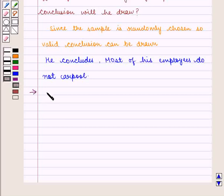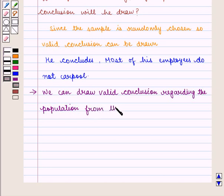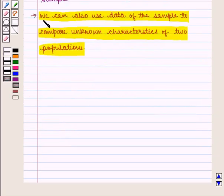Thus we can say that we can draw valid conclusion regarding the population from the data of a random sample to compare unknown characteristics of two populations.